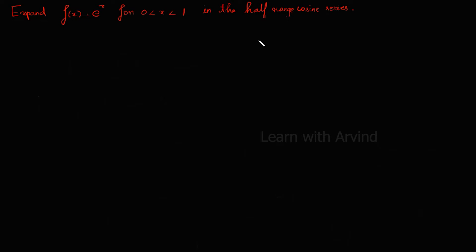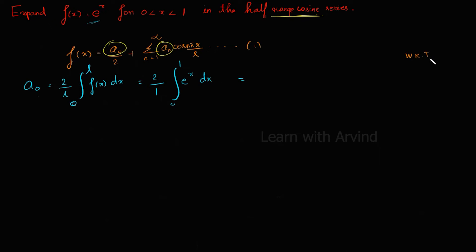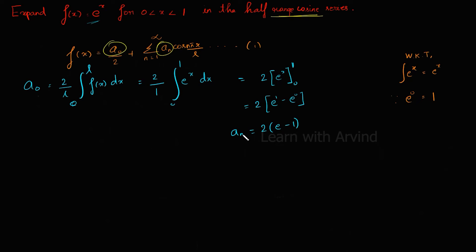Now we will see the half range cosine series. We will expand the function f(x) equals eˣ in the interval 0 to 1. The formula is f(x) equals a₀ by 2 plus summation n equals 1 to infinity of aₙ cos(nπx/L) — call this equation 1. a₀ is given by 2 by L times the integral from 0 to L of f(x) dx. Substituting f(x) equals eˣ and L equals 1: a₀ equals 2 by 1 times the integral from 0 to 1 of eˣ dx. Since the integral of eˣ is eˣ, applying the limits gives 2 times (e minus e⁰). Since e⁰ equals 1, a₀ equals 2(e minus 1).